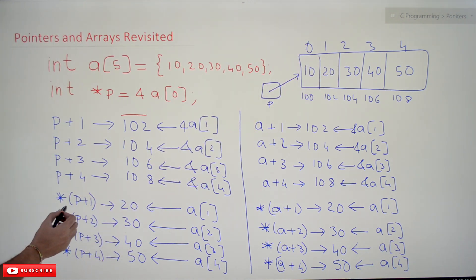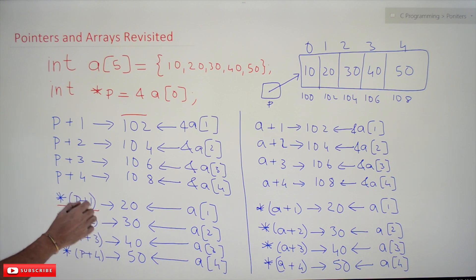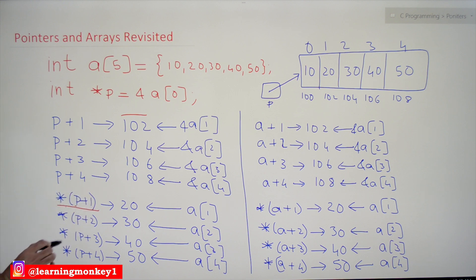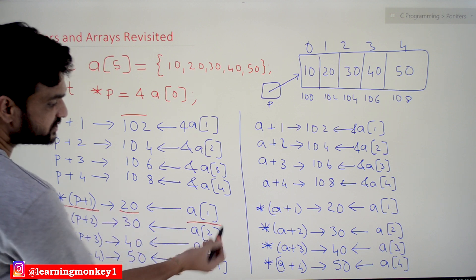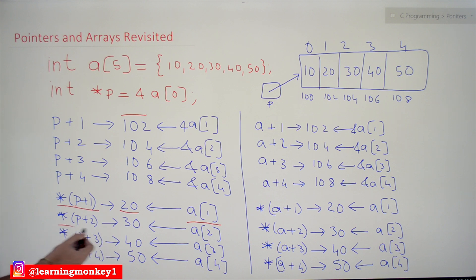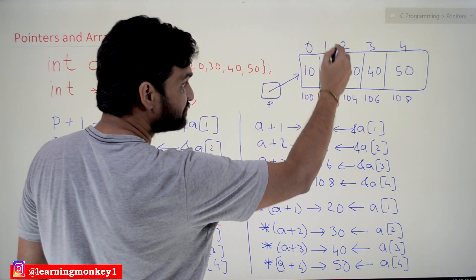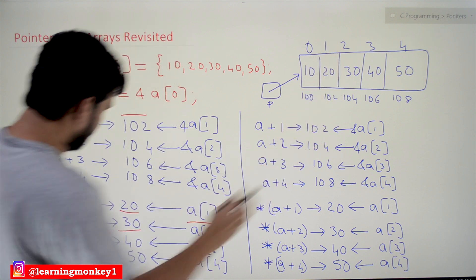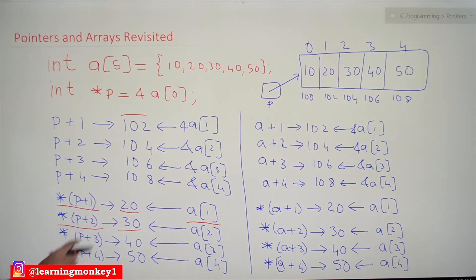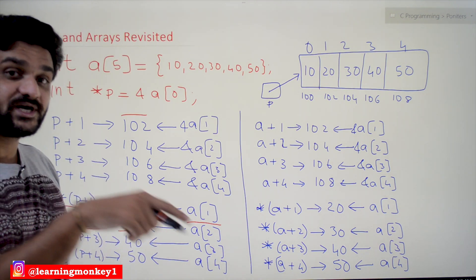To access the values stored at those addresses, we have other ways. One way is *(P+1) — note the parentheses around P+1. With *(P+1) we get 20. Similarly, a[1] is also equal to 20, and *(P+2) gives 30. To get the value stored at P+1, we must use the indirection operator with parentheses. Why? Because of operator precedence and associativity.